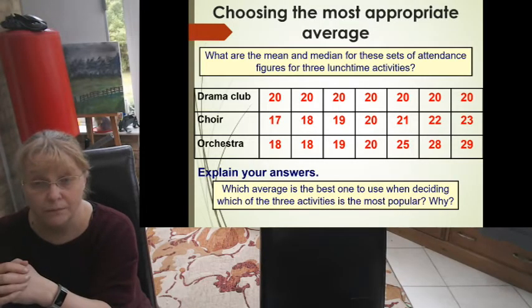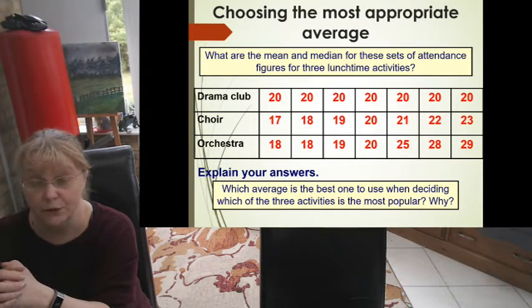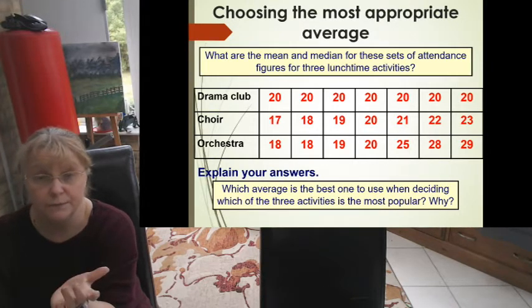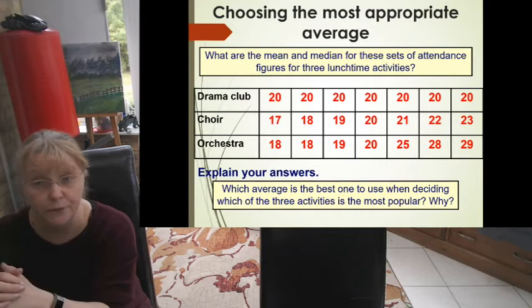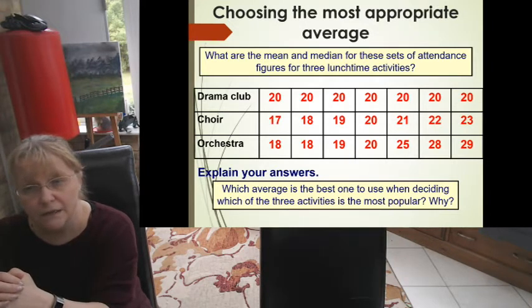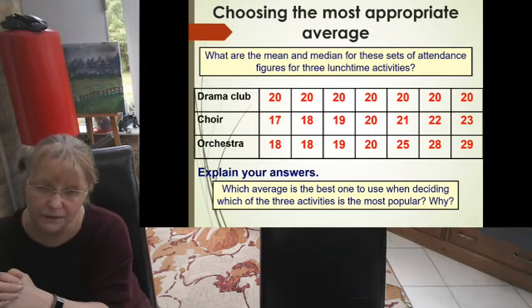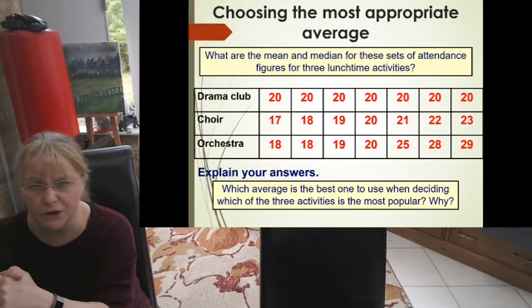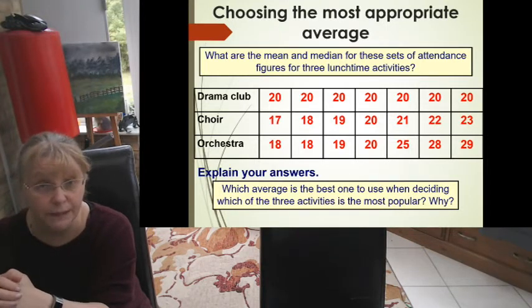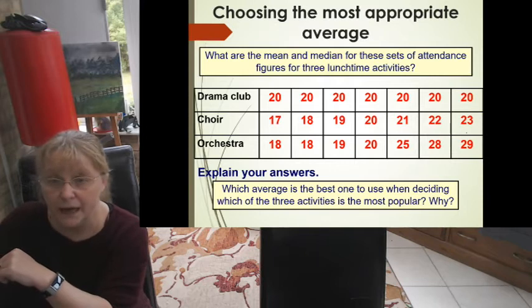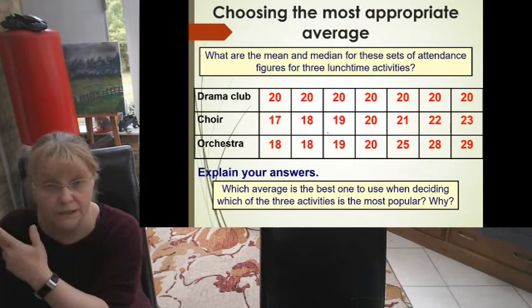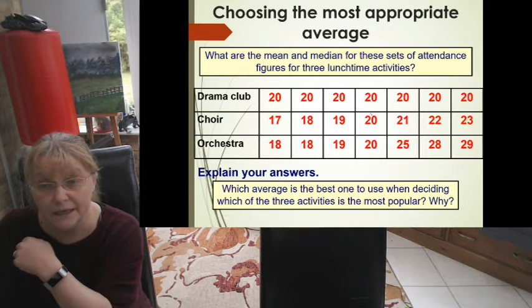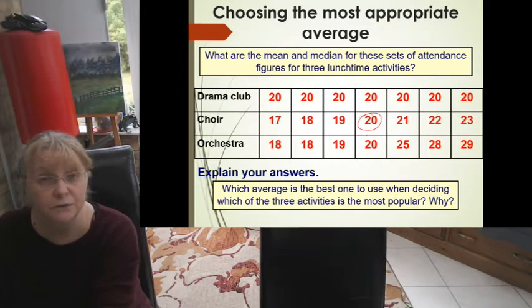Okay, for the drama club, in truth it doesn't matter which one you use because it's all 20, so the answer would be 20 for each of them. For the choir, I would probably... there's no point using mode because none of the numbers are repeated, but if you add up all the numbers and find the mean, your answer would be 20, and if you use the median, the answer would be 20.